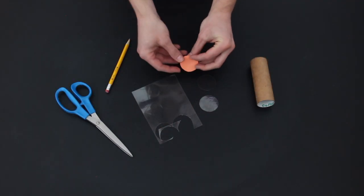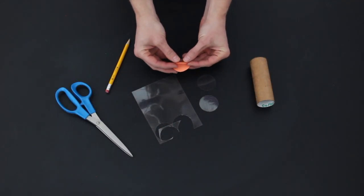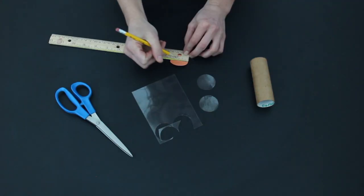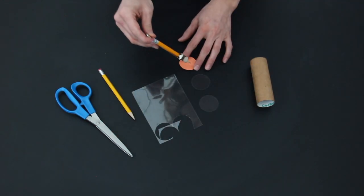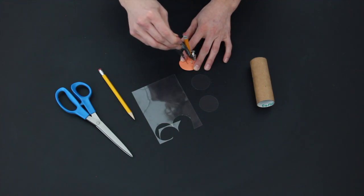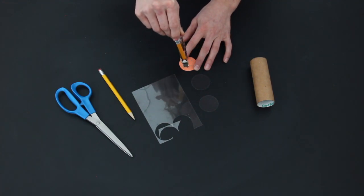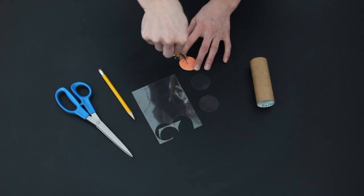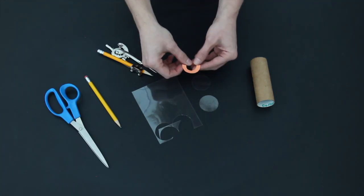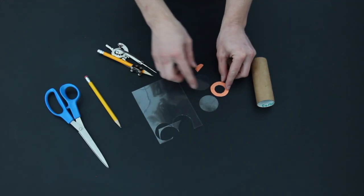You want the viewing hole to be right in the center of your paper circle. To find the center, fold the circle in half. Then use a ruler to find the center of the circle and mark it with a pencil. Unfold the paper, then place the compass point on your center mark and draw a one centimeter radius. Refold the paper and cut along the line to make a hole in the center of the circle.